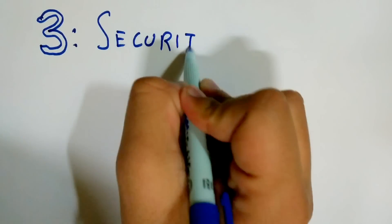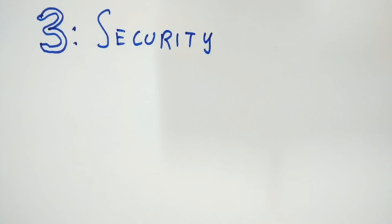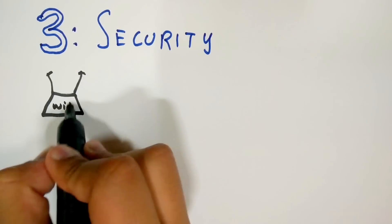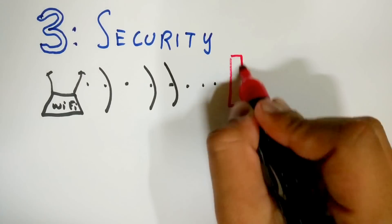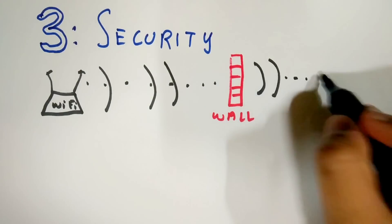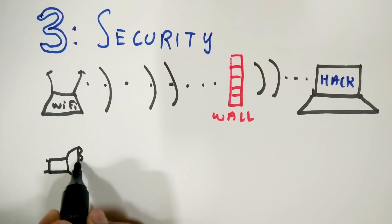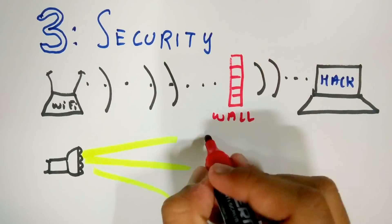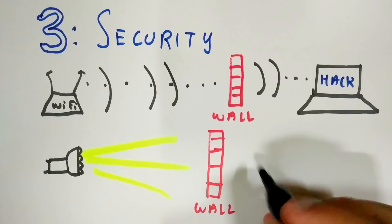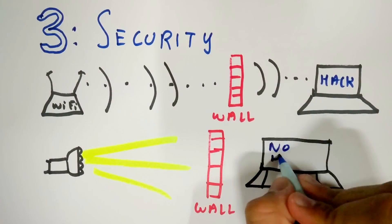The third and the most important reason to use Li-Fi over Wi-Fi is the security. As Wi-Fi uses electromagnetic waves, the signals can pass through walls and hackers can snoop into your system which is not at all safe. Li-Fi on the other hand uses light which does not pass through opaque objects like walls thus eliminating all the chances of an intrusion.